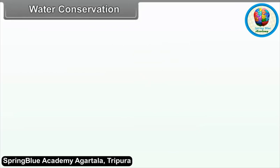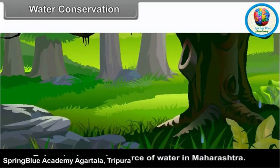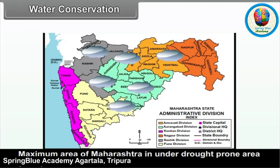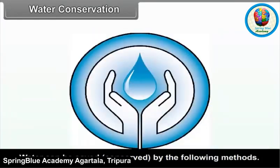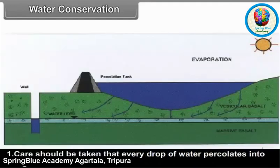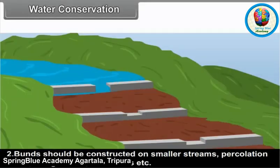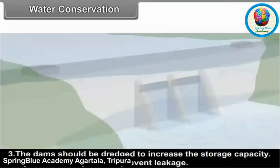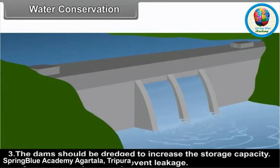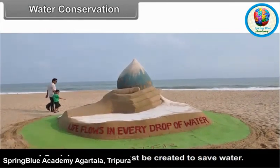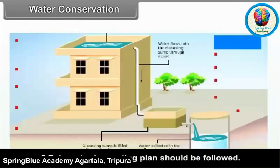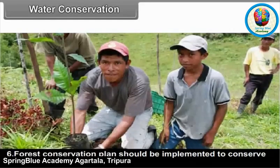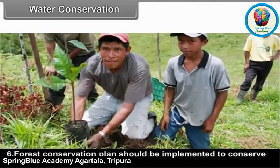Water Conservation: Rainwater is the main source of water in Maharashtra, and since maximum area is drought-prone, it is necessary to conserve water. Methods include: 1. Ensuring every drop of water percolates into the ground. 2. Constructing bunds on smaller streams, percolation tanks, village tanks, and farm tanks. 3. Dredging dams to increase storage capacity and repairing them to prevent leakage. 4. Creating social awareness to save water. 5. Following rainwater harvesting plans. 6. Implementing forest conservation plans to conserve water.